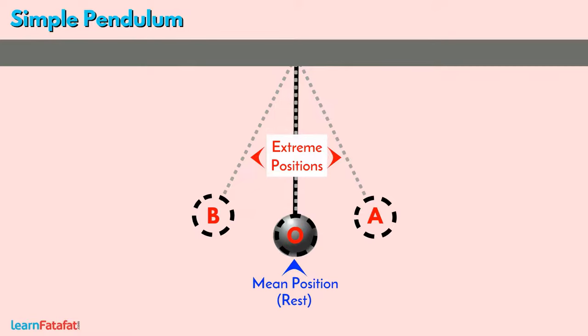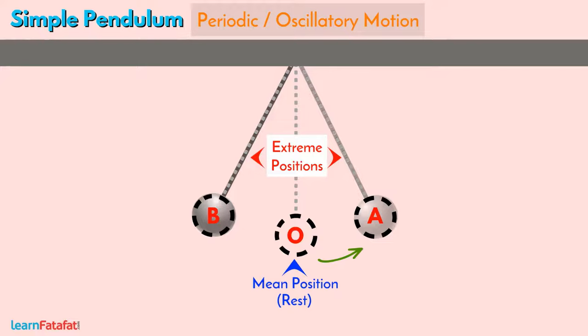The motion of the bob, i.e., the motion of a simple pendulum, repeats itself after a certain time. Such motion is said to be periodic or oscillatory motion. The bob completes one oscillation when it moves from mean position, goes to one of the extreme positions and then to the other extreme position and returns to the mean position again.